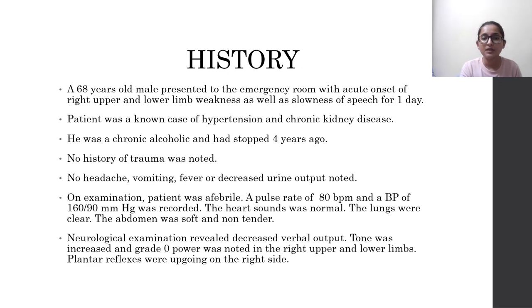History. My case is a 68-year-old male who presented to the emergency room with acute onset of right upper and lower limb weakness, as well as slowness of speech for one day. The patient was a known case of hypertension and chronic kidney disease. He was a chronic alcoholic who had stopped four years ago.